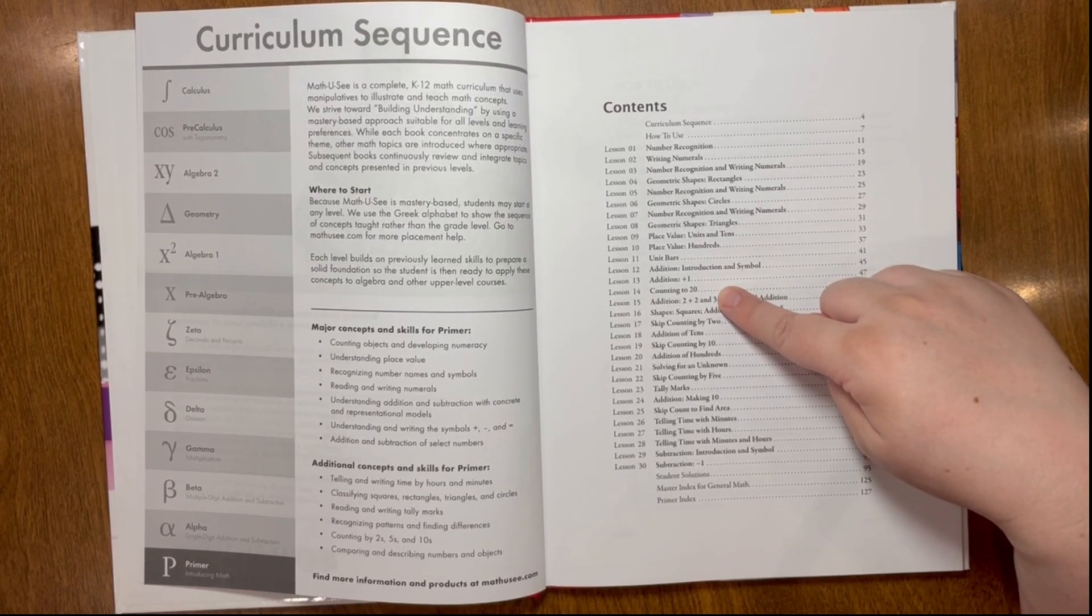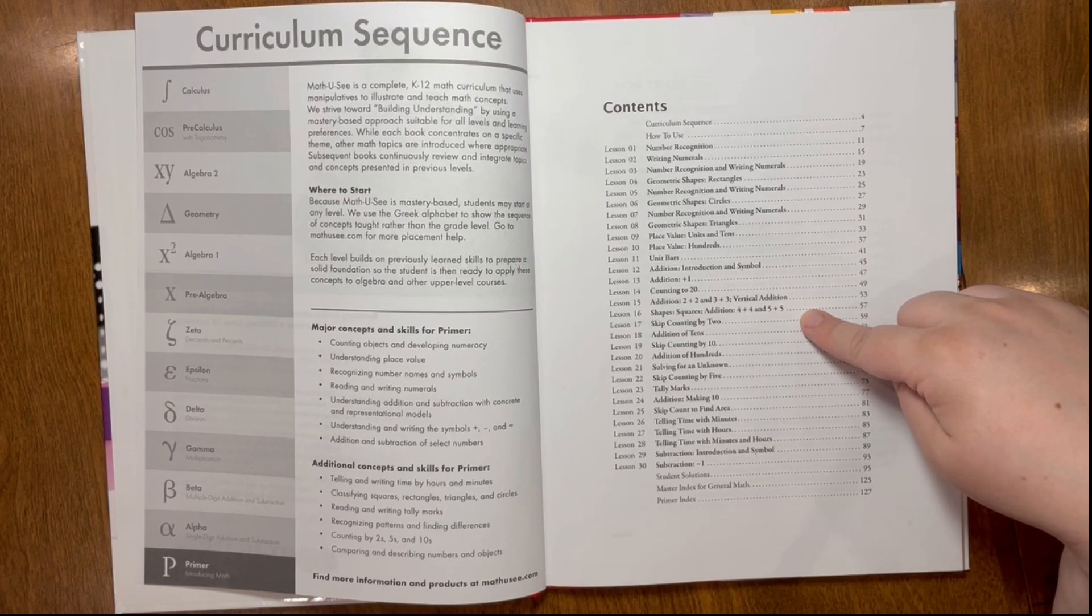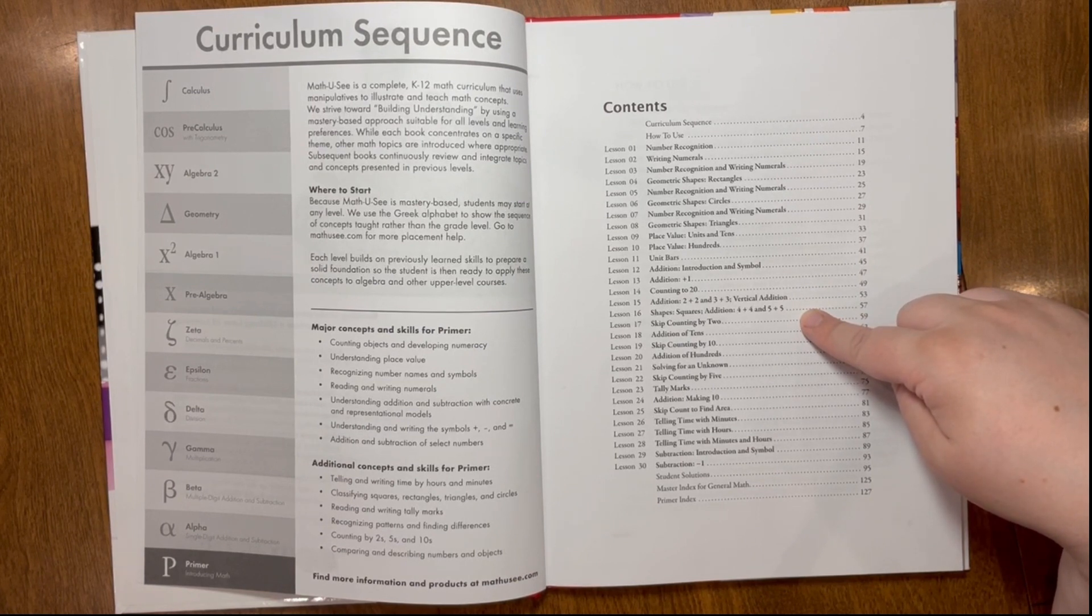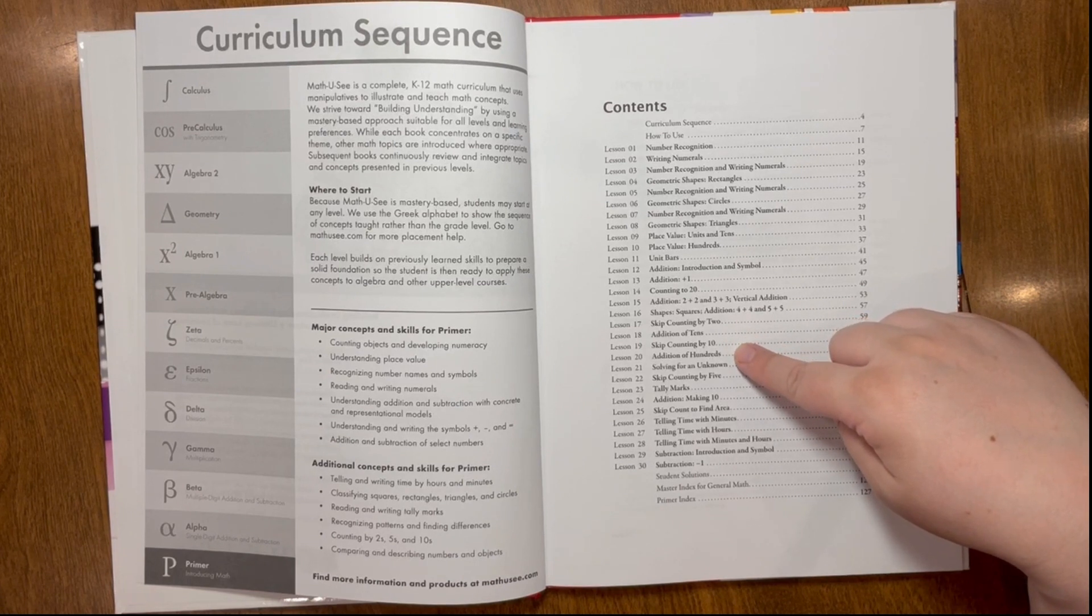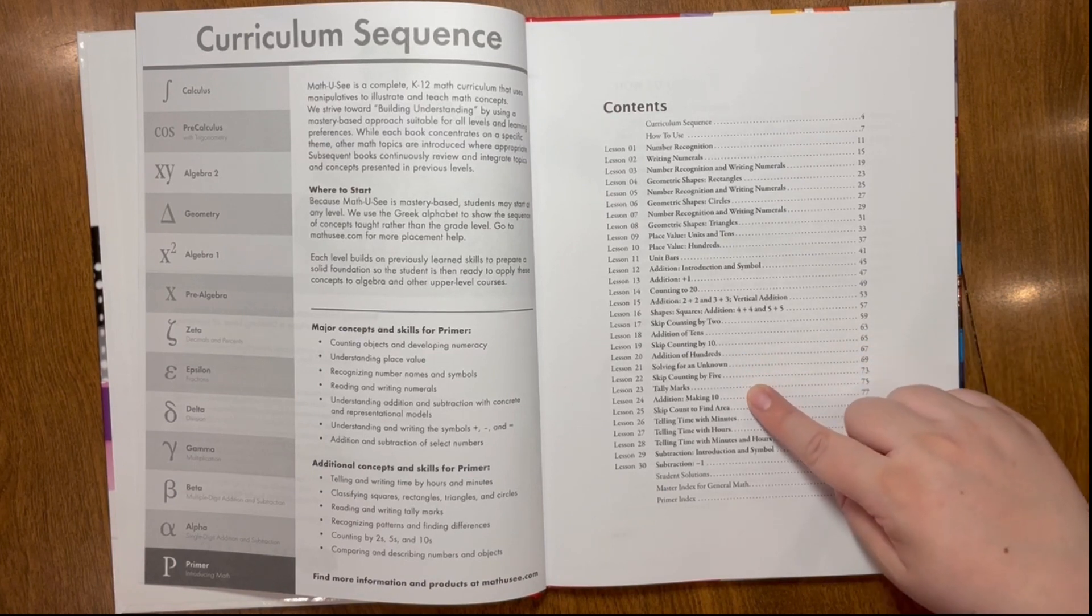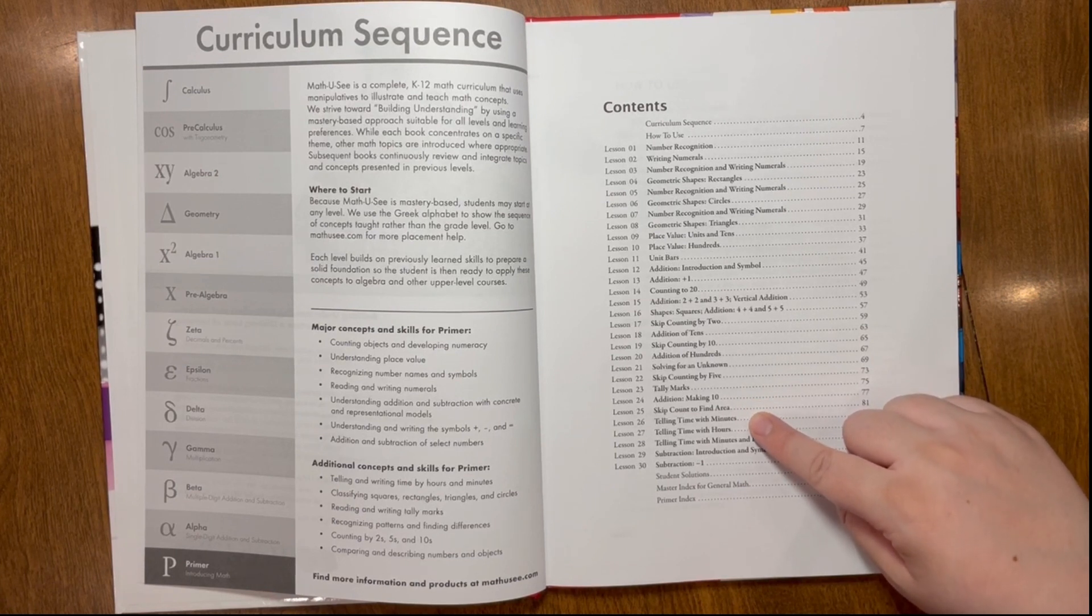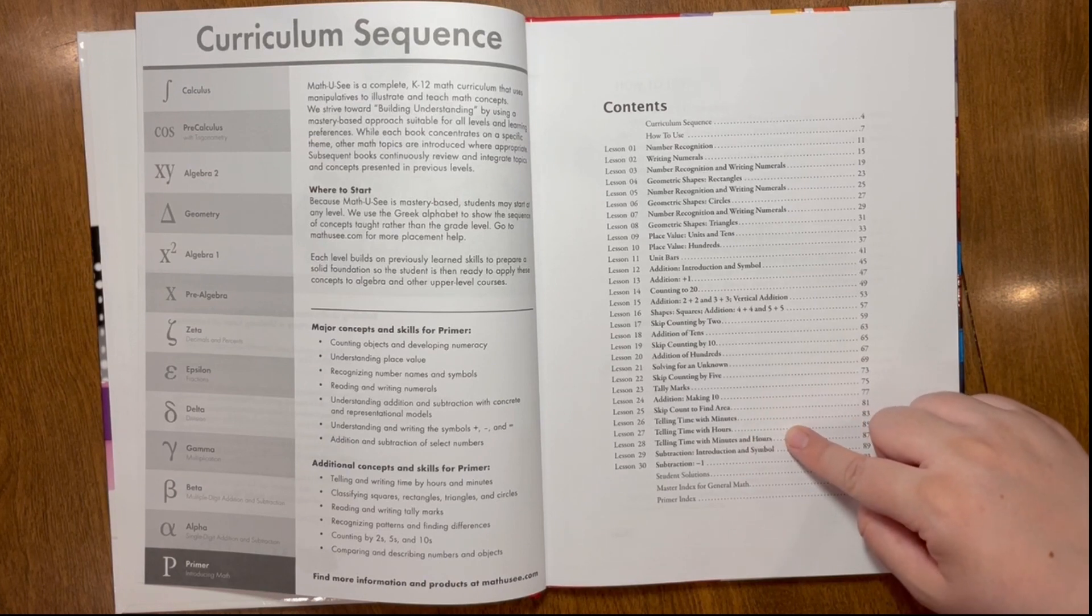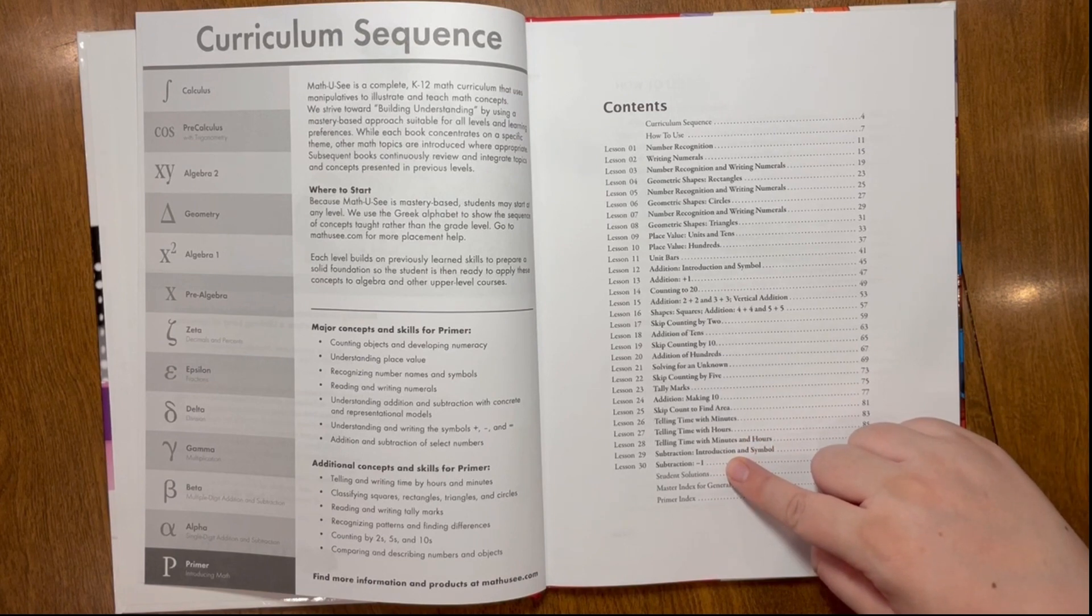Lesson 14, counting to 20. Lesson 15, addition, 2 plus 2 and 3 plus 3, vertical addition. Lesson 16, shapes, squares. Addition, 4 plus 4 and 5 plus 5. Lesson 17, skip counting by 2. Lesson 18, addition of tens. Lesson 19, skip counting by 10. Lesson 20, addition of hundreds. Lesson 21, solving for an unknown. Lesson 22, skip counting by 5. Lesson 23, tally marks. Lesson 24, addition, making 10. Lesson 25, skip count to find area. Lesson 26, telling time with minutes. Lesson 27, telling time with hours. Lesson 28, telling time with minutes and hours. Lesson 29, subtraction, introduction and symbol. Lesson 30, subtraction minus 1.